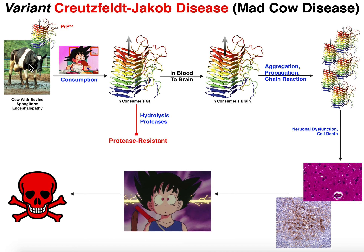Here's a cow with what we call bovine spongiform encephalopathy — this is the scientific name for mad cow disease. With these cattle, they have several distinct features that give away that they have mad cow disease. They have noticeable weight loss, they're also going to have postural problems — this cow is actually not having very good posture and is having to compensate a little bit.